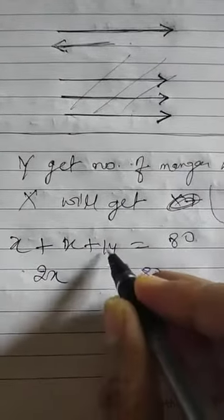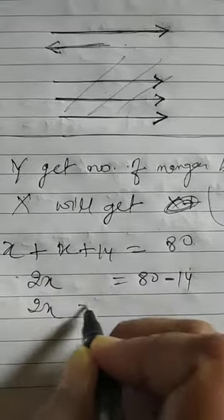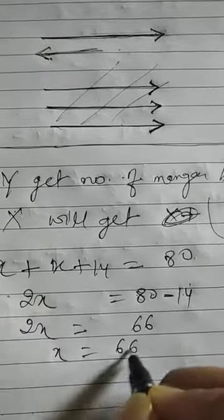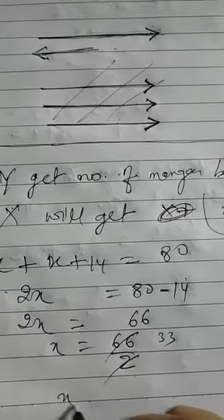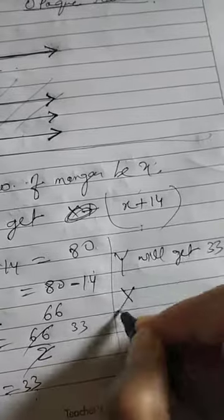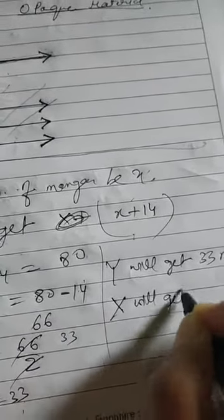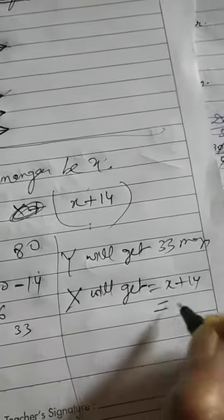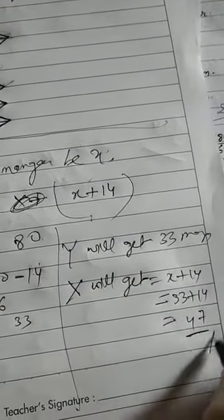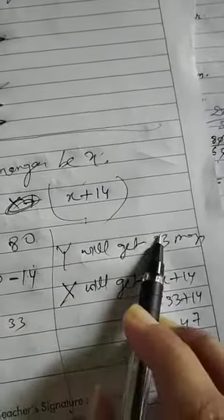Solving: x plus x gives 2x. Bringing 14 to the other side: 2x equals 80 minus 14, which is 66. So x equals 66 divided by 2, giving x equals 33 mangoes. So y gets 33 mangoes. Then x (the person) gets 33 plus 14, which is 47 mangoes. And 47 plus 33 equals 80 total mangoes.